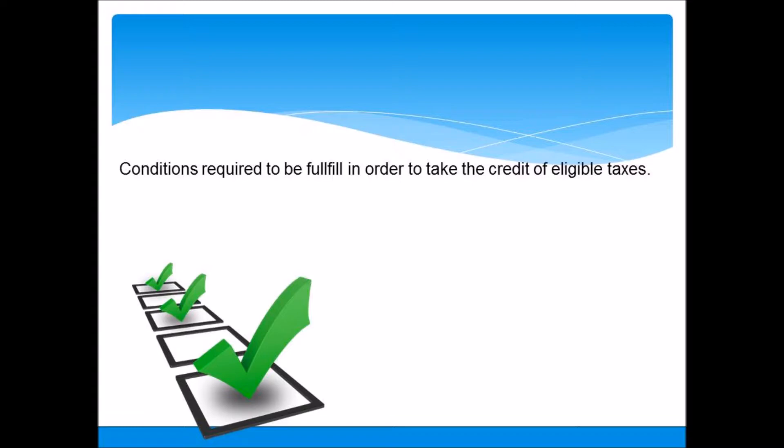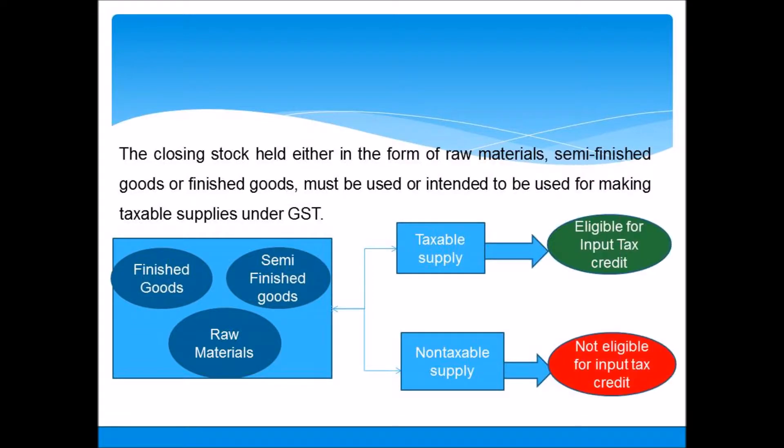The closing stock held either in the form of raw materials, semi-finished goods, or finished goods must be used or intended to be used for making taxable supplies under GST.